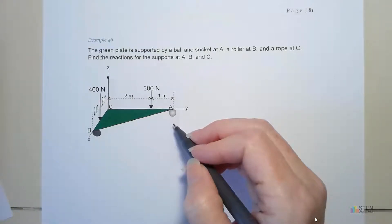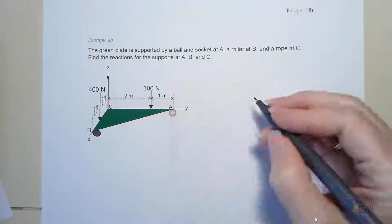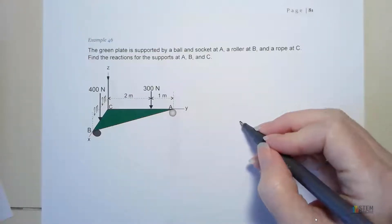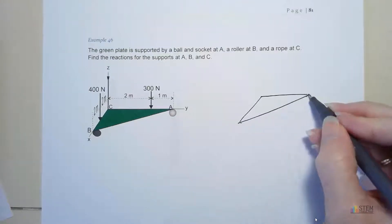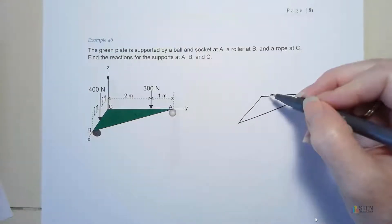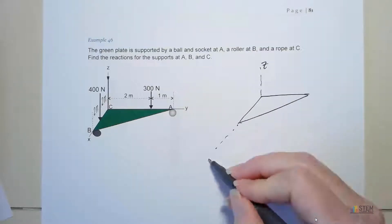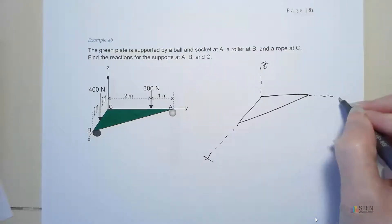First thing we're going to do is draw the free body diagram. Let's go ahead and draw this plate. So there's my plate and let's put the axes here: Z, X, and then Y.